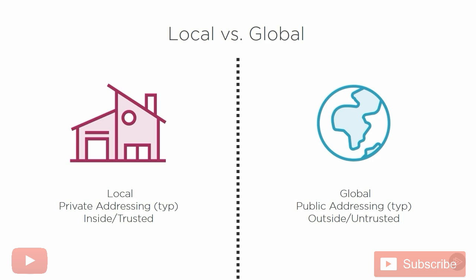The idea with NAT is that we need to identify a local area and a global area for the packet to exist in. We record information about the packet when it's in the local network, manipulate the packet header, send it over to the global network, and then reverse the process when it comes back. Local and global identify which side of the NAT device we are talking about.